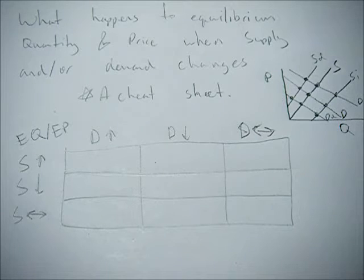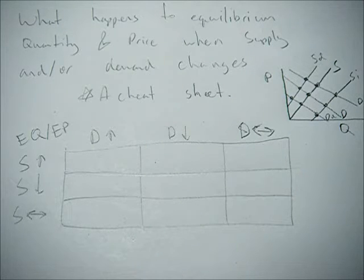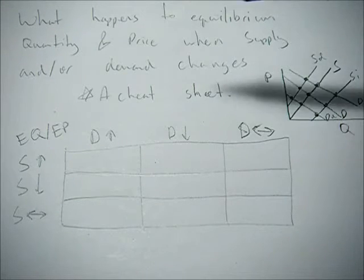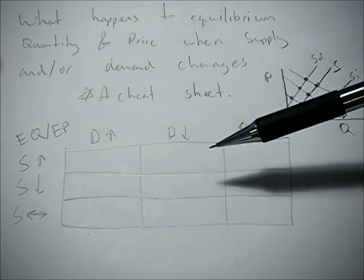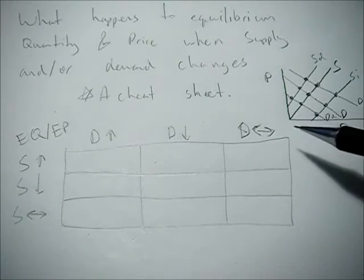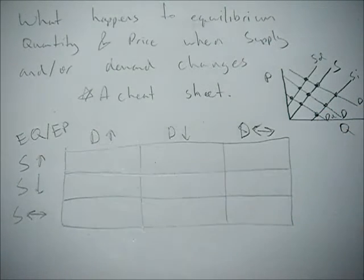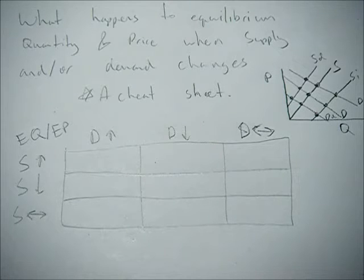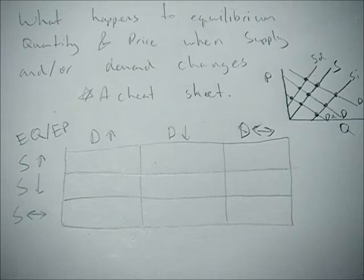This video is going to go over basically a cheat sheet for what happens to equilibrium price and quantity when supply and demand changes. I've broken this down into nine different scenarios because demand can do three things and supply can do three things. You can use this cheat sheet to check your work. I wouldn't recommend memorizing it, but you could study from it and try to learn it.